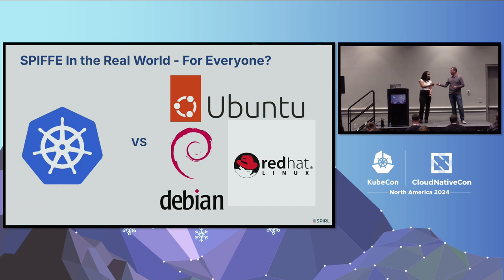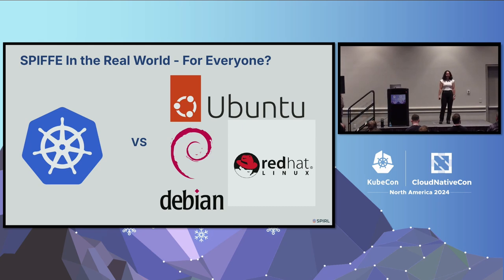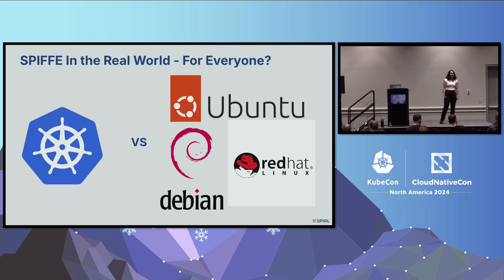With that quick introduction to SPIFFE, I'll pass it to Nadine to continue. Thanks, Eli. I'm going to talk more about what using SPIFFE in the real world looks like and what different deployments look like. Quick show of hands — how many people have deployed SPIFFE in Kubernetes before? Okay. And how many have deployed it in Linux? Okay, not as many as Kubernetes. That's kind of why I wanted to do this talk — SPIFFE is meant to be for everyone, letting you give identities to any of your workloads regardless of where they're running.